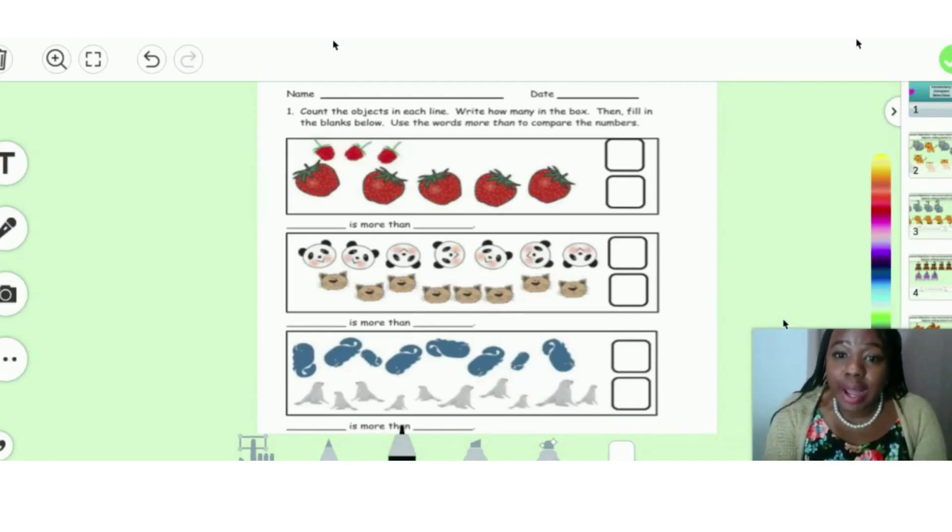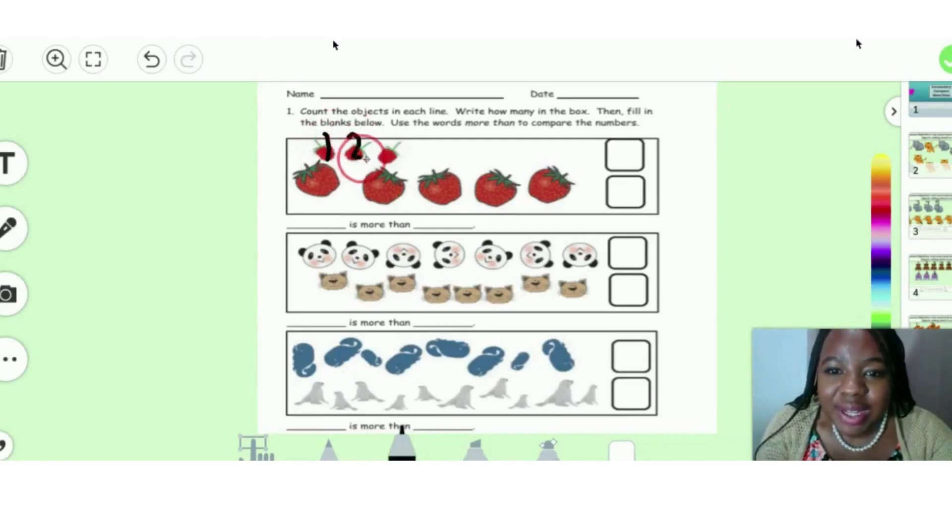So let's read what we have to do. It wants us to count the objects in each line, write how many are in the box, and then fill in the blank below. We're going to use the words more than to compare the numbers. So first, let's count our raspberries. One, two, three. Three raspberries. And we're going to write the number three.